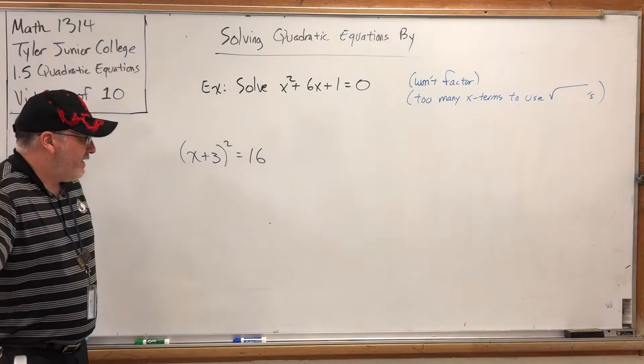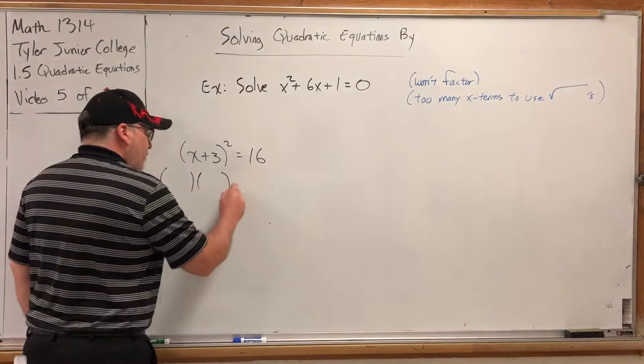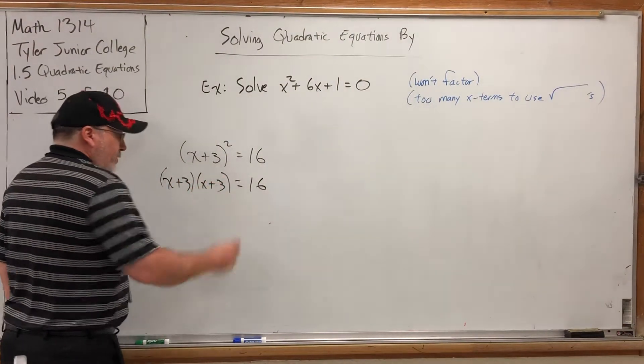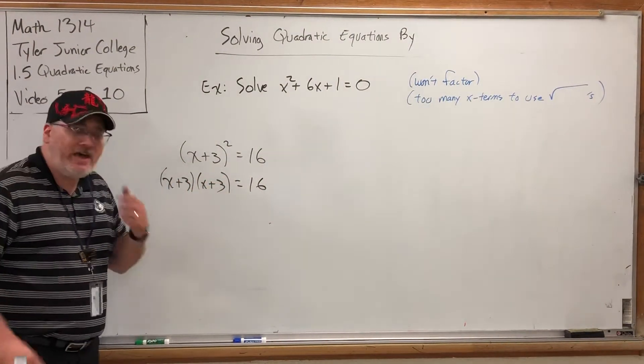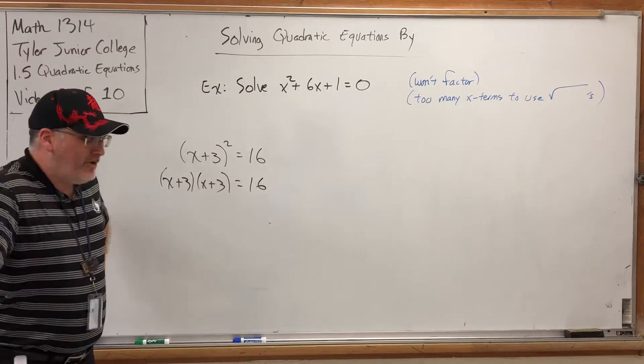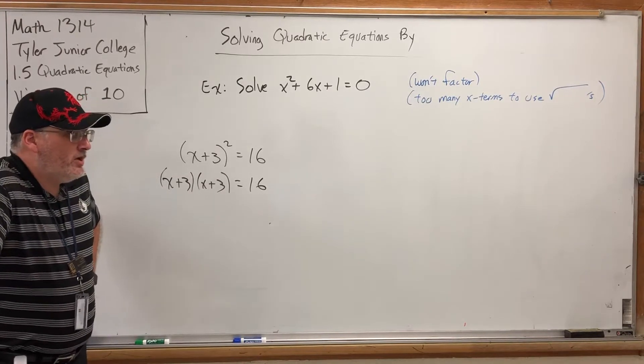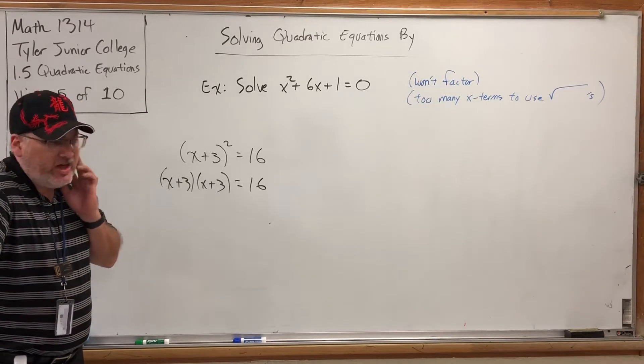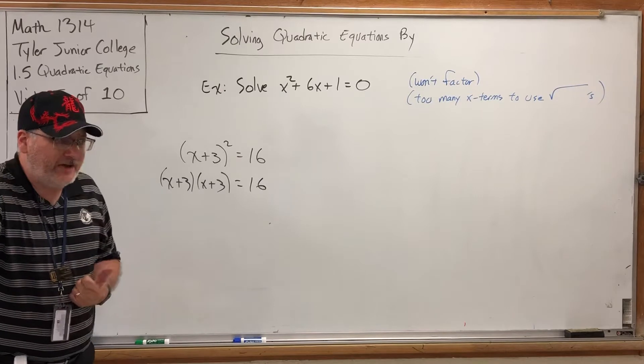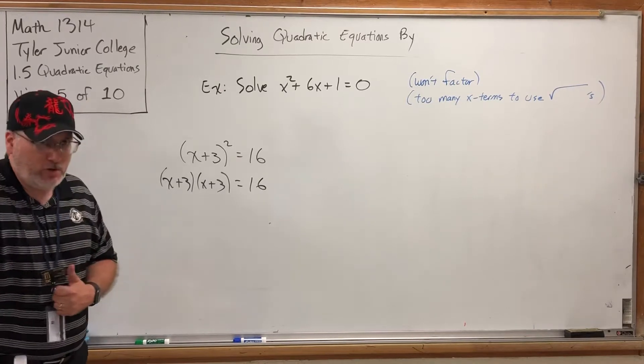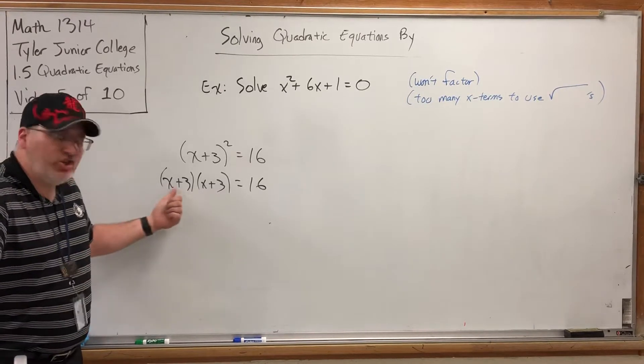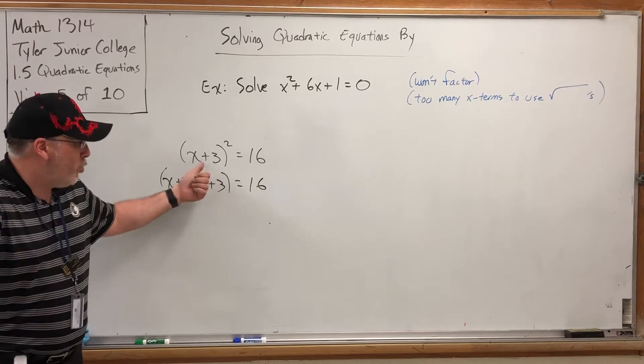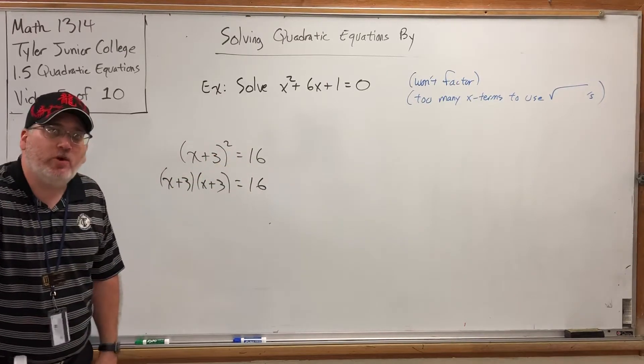The left side is something that was already factored into x plus 3 times x plus 3. It was just written with one x plus 3 because the factors match. So can we capitalize on this? Can we somehow doctor this problem up so that the left side will factor? But not only factor, factor into the same thing twice.